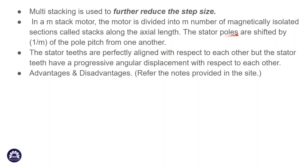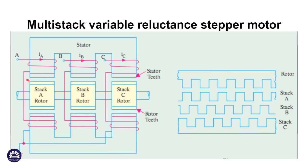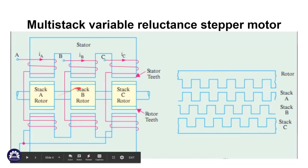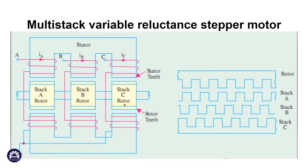The stator poles are shifted by a fraction of the pole pitch from stack to stack. The motor is divided axially into Stack A rotor, Stack B rotor, and Stack C rotor — these are the axially divided sections.